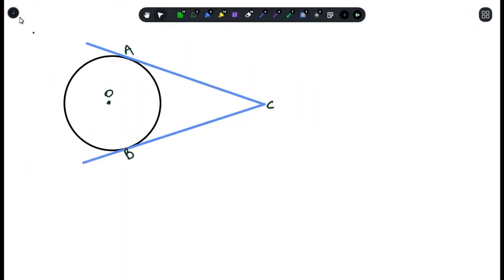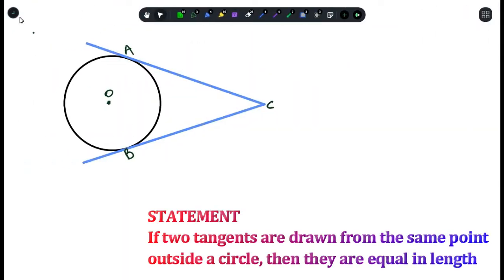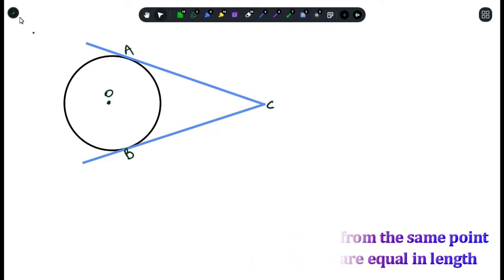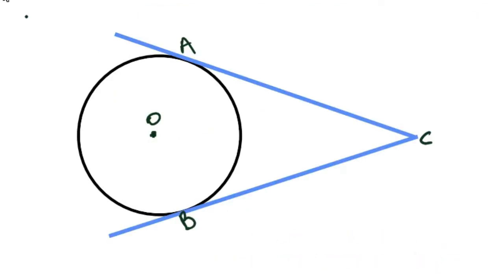So what the statement means: if two tangents are drawn from the same point outside the circle, then they are equal in length. What that actually means is that AC, which is a tangent, and BC, which is also a tangent, they meet at C. So because they do meet and they are both tangents, we understand that they will be equal in length.